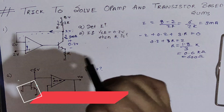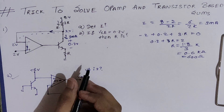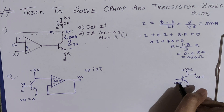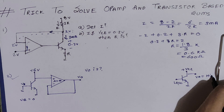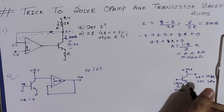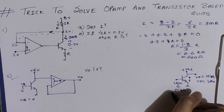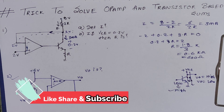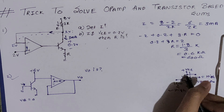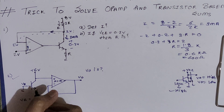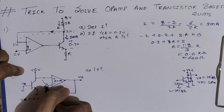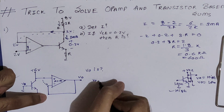Now let's see the second problem where we have to find the output voltage. Here Vb = 0V. You should know: if base voltage is low, the output voltage is high (Vcc present). If base voltage is high, the transistor acts as a short circuit, pulling the output to zero volts. Since Vb = 0V, the transistor is open-circuited, so 6V connects to the non-inverting terminal, and using virtual ground, Vo = 6V.